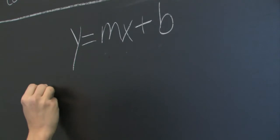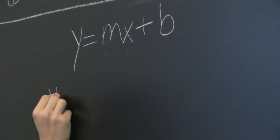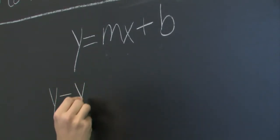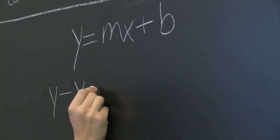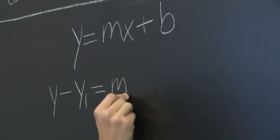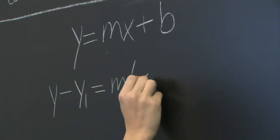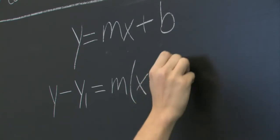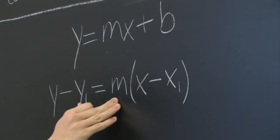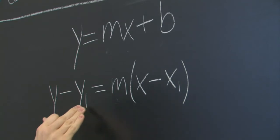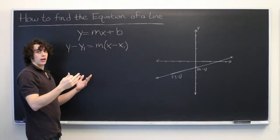The other form that you may be familiar with is called point-slope form: y minus y1 equals m times (x minus x1), where again, m is the slope, and y1 and x1 are coordinates of any point on the line.